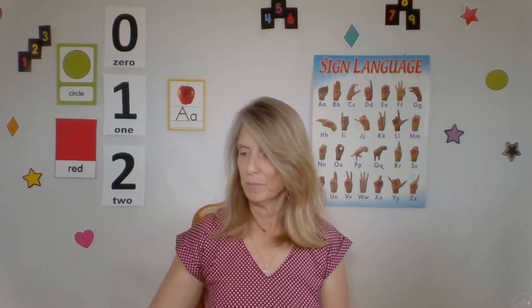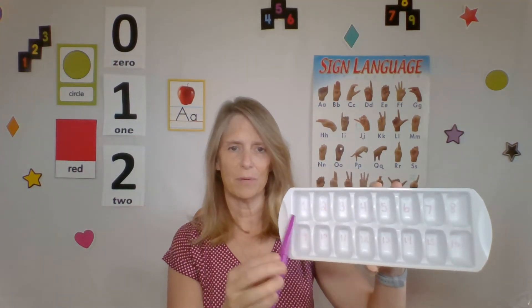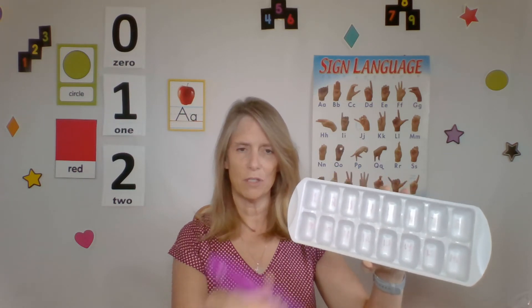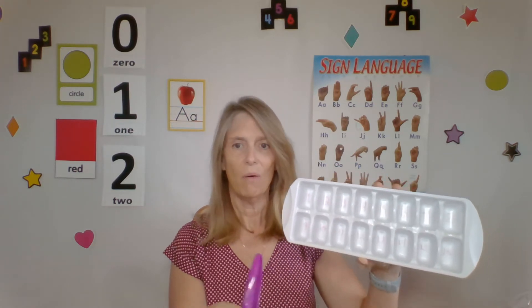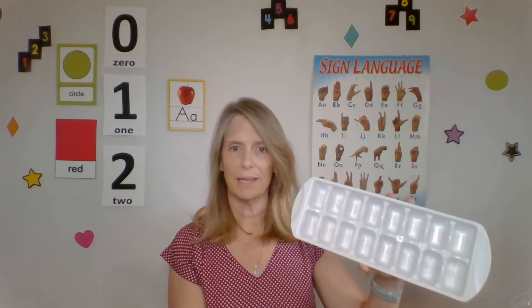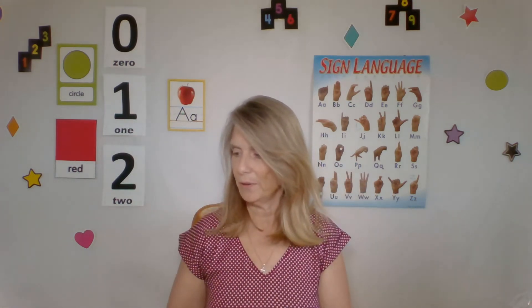If you have an extra ice cube tray, again, cheap at the dollar store, you can use the tongs with this. You can see that I have numbers written inside. So let's put one bean into the number one spot. Let's pick up two and put it in the number two spot. Or you could go sorting with colors. Let's pick up all the red corn kernels and put them on the top and all the blue ones and put them on the bottom. You can come up with whatever you want to do there with that.